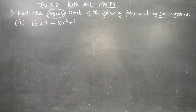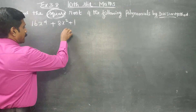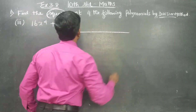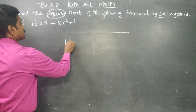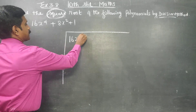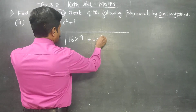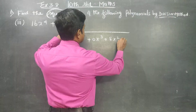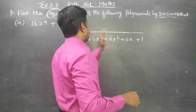Dear 10th standard students, find the square root of the following polynomial: 16x power 4 plus 8x square plus 1. First you have to draw the division symbol because this is a division sum. Write the polynomial in descending order: 16x power 4, 0x cube, 8x square, 0x, plus 1.